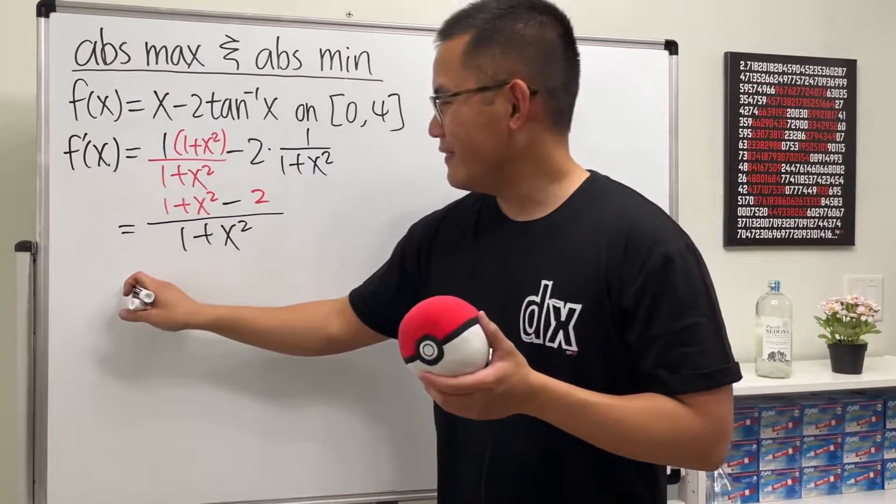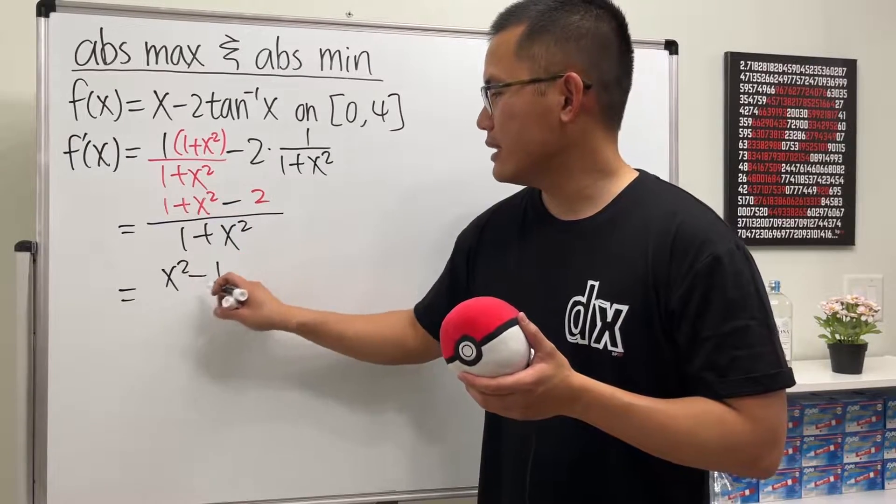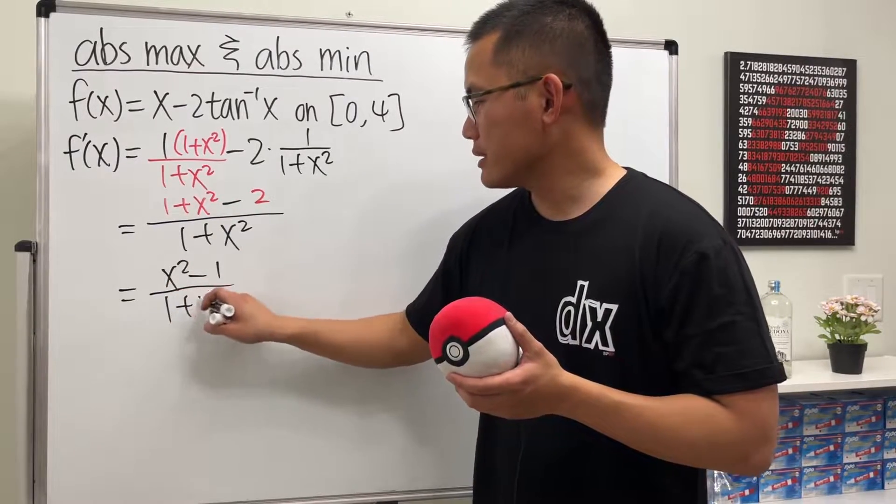And then the second part is 2 times 1, which is just 2. That's pretty nice. In fact, we just have x squared minus 1 over 1 plus x squared.